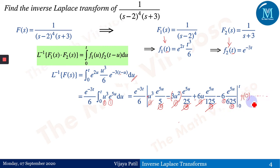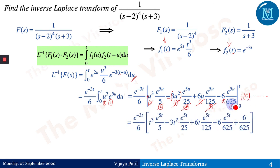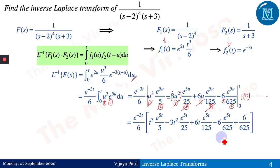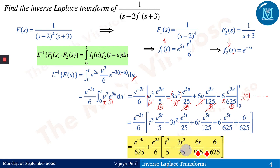Applying limits from 0 to t: substitute u = t for the upper limit and u = 0 for the lower limit. The first three terms vanish at the lower limit. The signs alternate plus–minus–plus–minus, and with the external minus, the constant term at u=0 yields +6/625·e^(−3t). After adjusting all terms, you get the final answer.